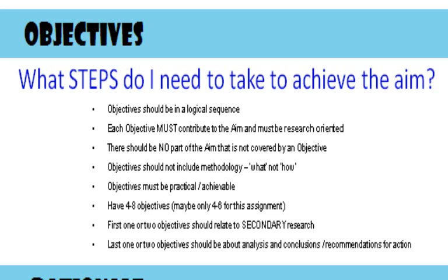Each objective has to help you cover the aim. If there are any objectives that aren't necessary in order to achieve your aim, they shouldn't be included. There should be no part of the aim that isn't covered by an objective — if you miss off part of your aim, then you aren't going to achieve it. Objectives should not include methodology; you're saying what you will do in your objectives, not how you will do it. Objectives must be practical and achievable, because they are what you have to do in order to achieve your aim — there is no point setting yourself something that's not achievable.